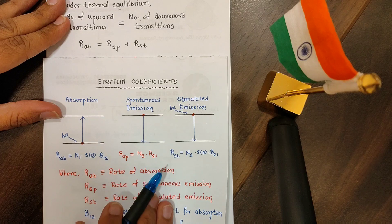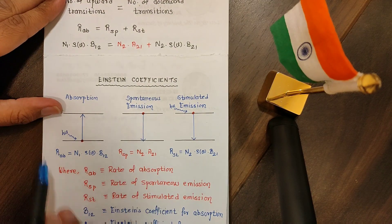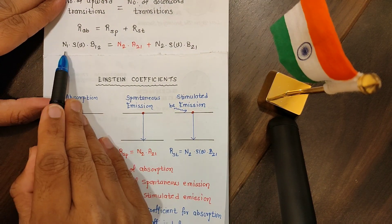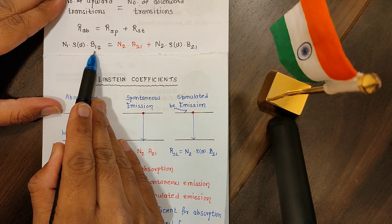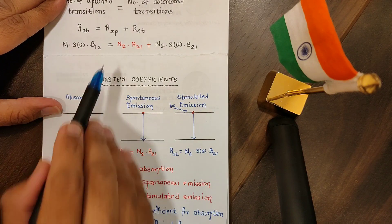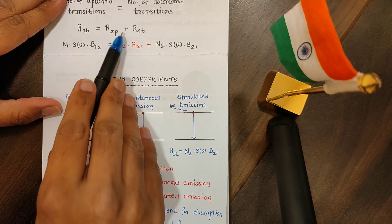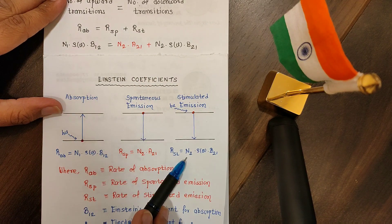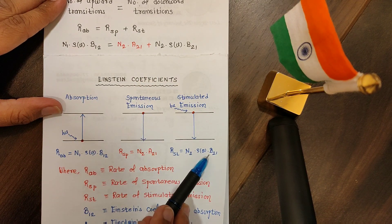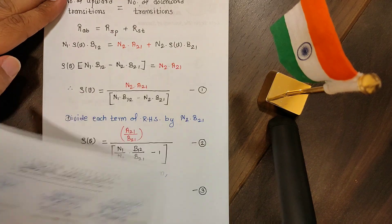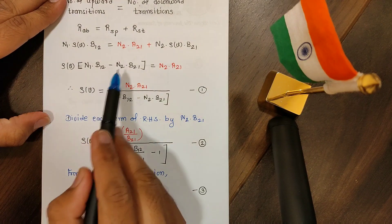Now we know that there is only one upward transition, so here I will write the rate of absorption. But there are two downward transitions, one is spontaneous and the other one is stimulated. So we can write RAB equals RSP plus RST. Let's substitute their equations.